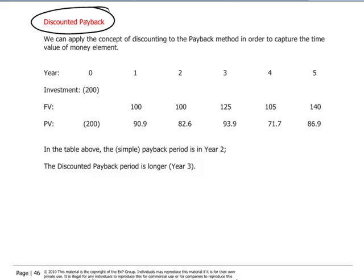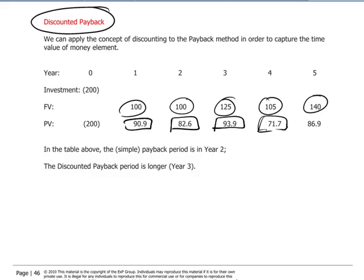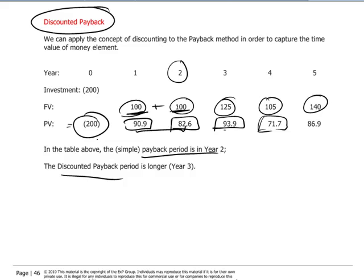The discounted payback method is interesting because instead of counting the simple cash flows in the future from a project, it discounts them to a present value and then accumulates them until the initial investment amount is covered. Whereas the simple payback method using nominal values would show a two-year payback — 100 plus 100 is exactly equal to 200 — when we discount those numbers, it takes longer to reach 200: 90.9 plus 82.6 makes 173.5, and we have to go into the third year to finally reach 200.